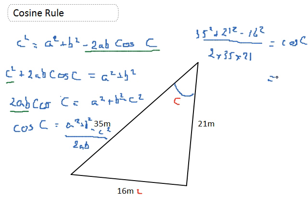When I work that out, I should get a decimal. 35² + 21² - 16², and then divide all of that by 2 × 35 × 21. Make sure you use brackets, otherwise you'll probably get the wrong answer. So I get cos C = 0.9592.